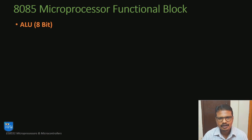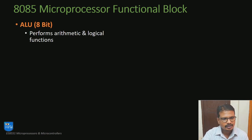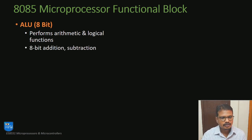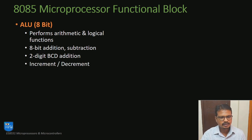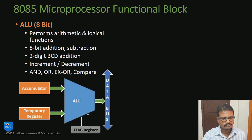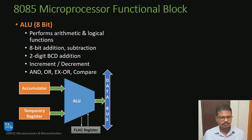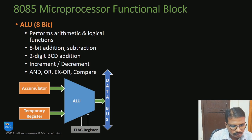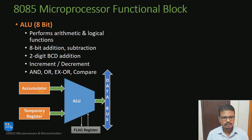Next is the arithmetic logic unit. The ALU is an 8-bit unit which performs arithmetic and logical functions. It performs 8-bit addition, subtraction, 2-digit BCD addition, increment and decrement operations, and logical operations like AND, OR, XOR, compare, etc. As you can see on the screen, the circuit diagram shows the ALU connected to the accumulator and the temporary register — these are the input registers to the ALU.